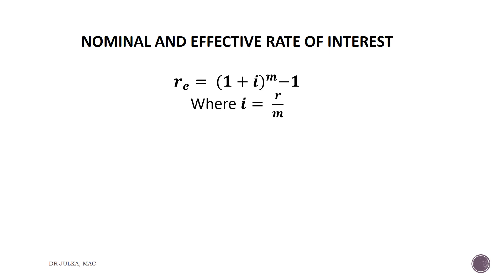Effective rate of interest or annual equivalent rate are one and the same thing. The effective annual rate of interest is the interest rate that is actually earned or paid on an investment, due to the result of compounding over a given time period.